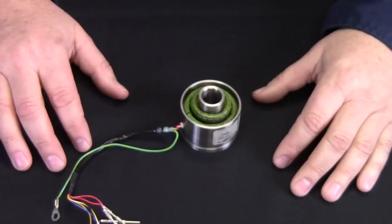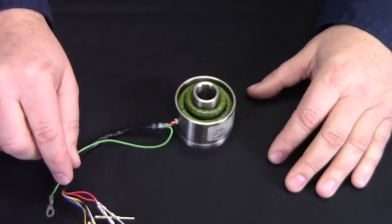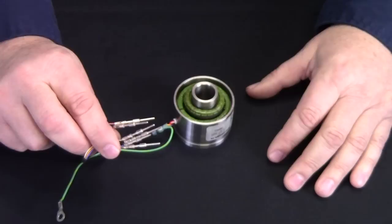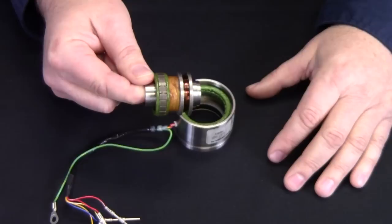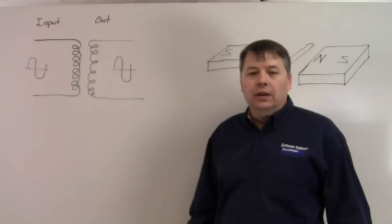A Resolver is made up of two basic components, the stator and the rotor. The stator has three transformers inside: the reference, which is the input, and the sine and cosine, which are the outputs. The rotor couples the reference signal back to the outputs located 90 degrees from each other and is the only part that actually moves.